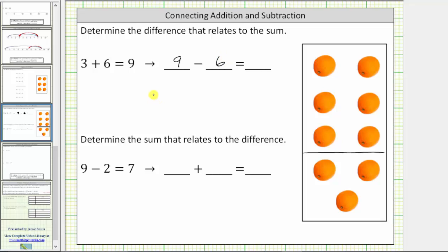Now if we go back to our model, if we begin with nine oranges, and then because we are subtracting six, we remove six oranges. We can see the result, or what's left is three, giving us the difference.